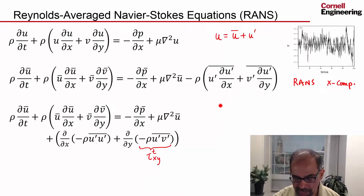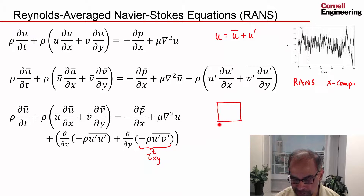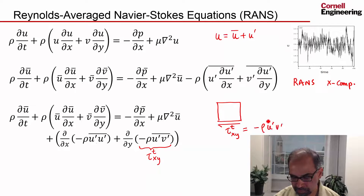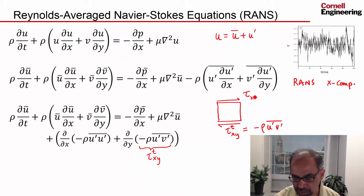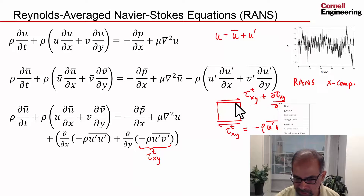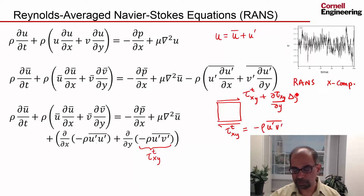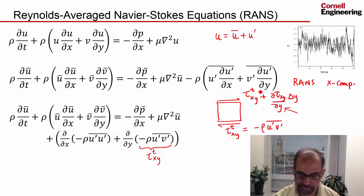If I look at an infinitesimal fluid particle, on average the fluctuations are creating an additional stress — tau_xy turbulent — and that's given by that expression. That's the average effect of the turbulence. Similarly, you'll get a shear on the other face: tau_xy turbulent plus d(tau_xy)/dy times delta_y. The net turbulent shear is proportional to that term, because you get cancellation, and this is the net turbulent shear stress on the fluid particle.